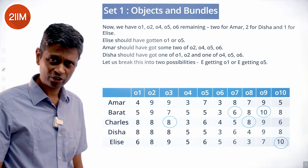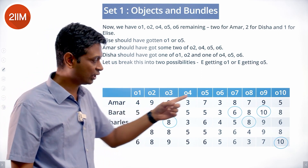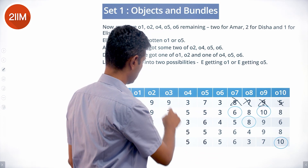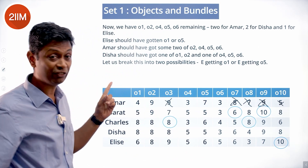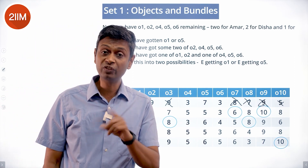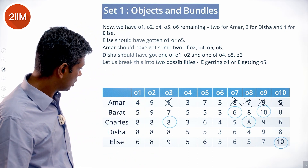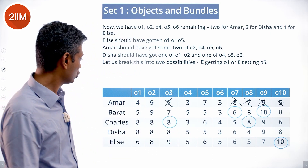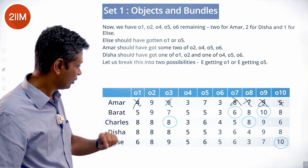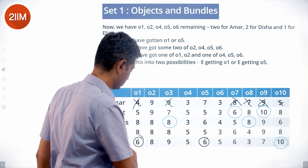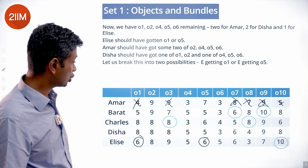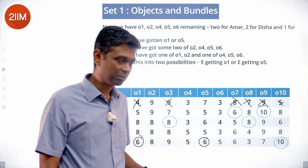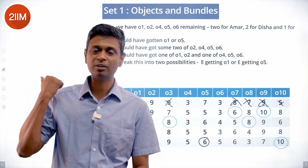Now, Disha has got an odd number, which means Amar has got an even number. Amar's total should be an even number less than 16, and he could not have got O1. So Amar should have 2 out of O2, O4, O5, O6. Elise has got 10 and adds up to 16, so she should have got either one of the two remaining 6s. Disha's total adds up to an odd number, so she should have got one even-valued object and one odd-valued object — one of the 8s and one of the remaining odds.